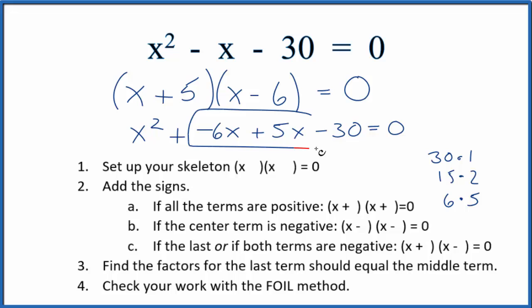If we look at this middle term here, minus 6x plus 5x. That's minus x. So, this matches what we have up here. So, that's correct.